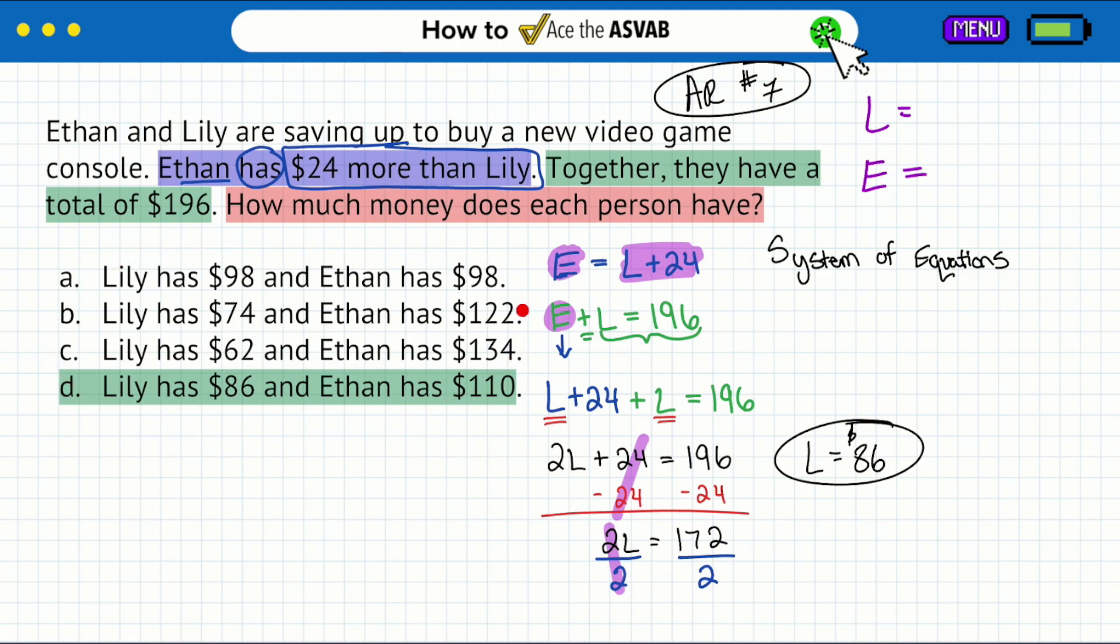The hints were Ethan has $24 more than Lily and together it's $196. So you have to pick which answer shows that Ethan has $24 more than Lily. You go to A—no, they have the same amount of money, so that wouldn't work at all. Next up, you take a look at B. Lily has $74, Ethan has $122. If you add $24 to Lily, do you get Ethan? No, because you add 24 to 74 and you get 98, not 122. Even though these two amounts add up to $196, they do not show that Ethan has $24 more than Lily. So that's automatically out as well.